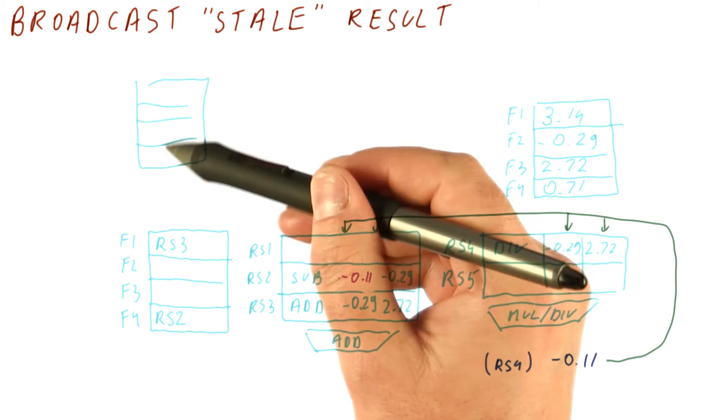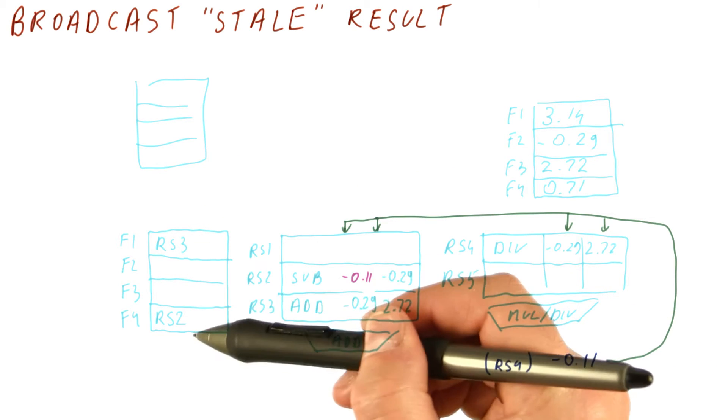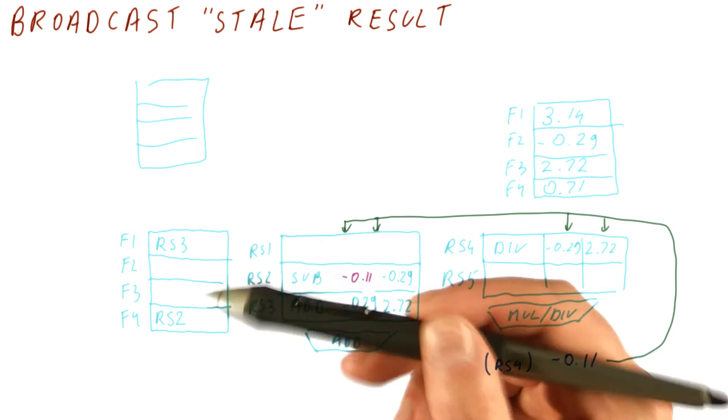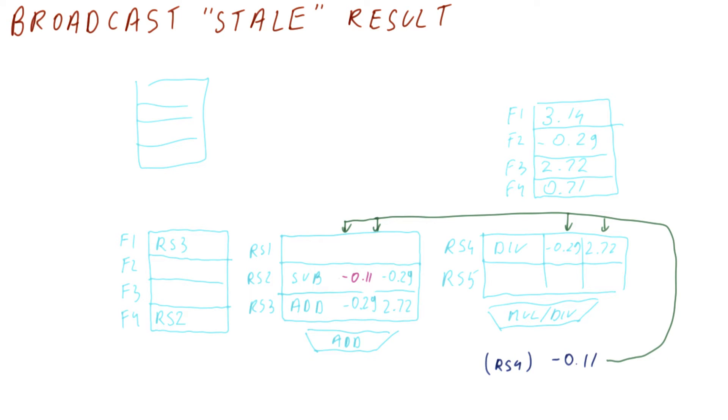Also, all the instructions that come in after this instruction are going to look here to see what is the newest renamed value of this result. And they're going to find RS2, for example, for this value.